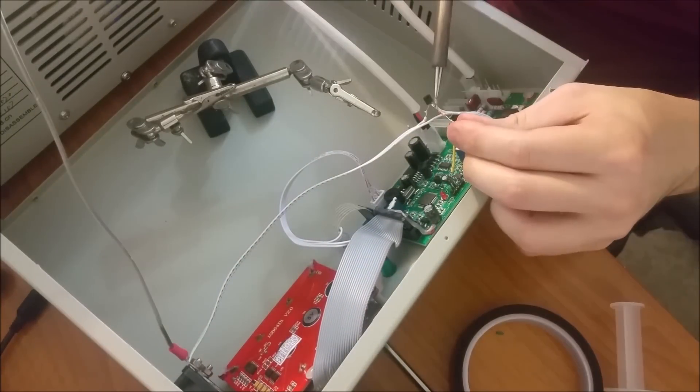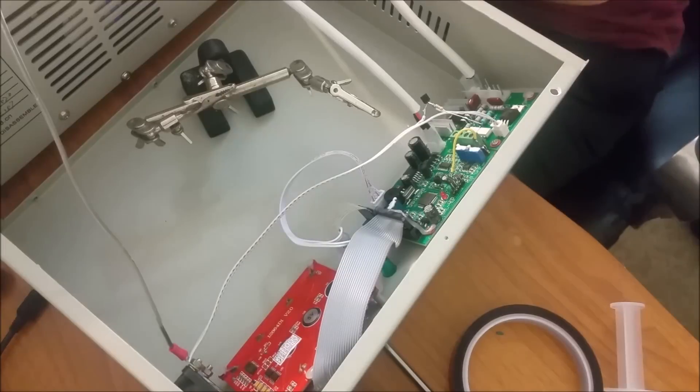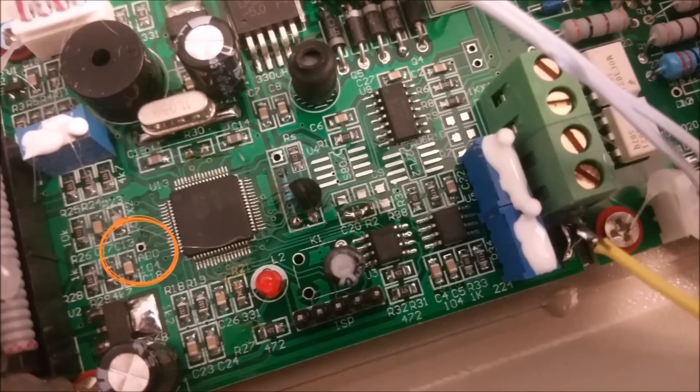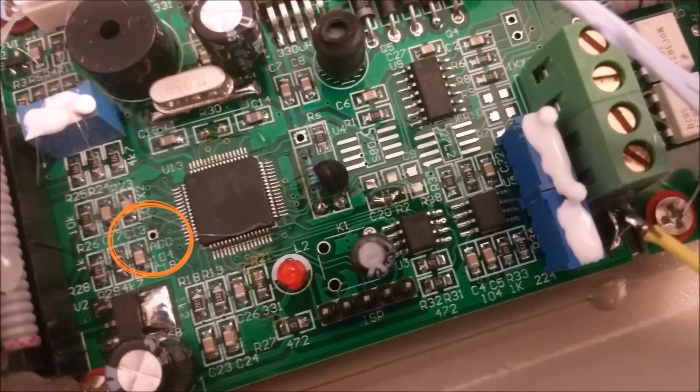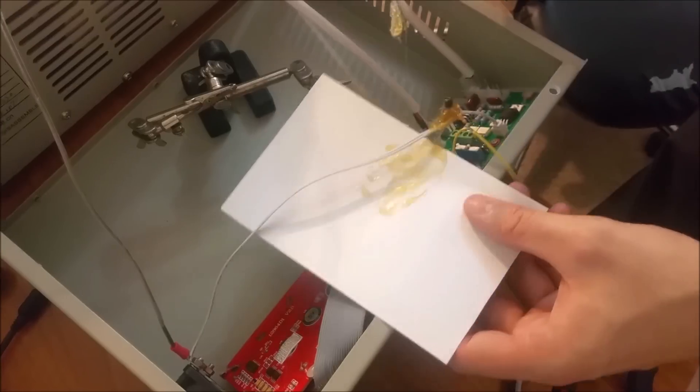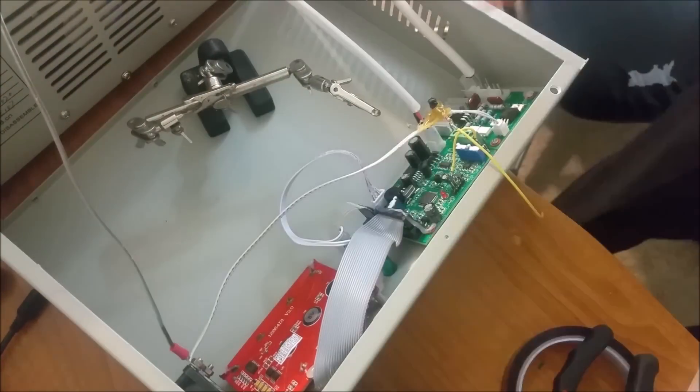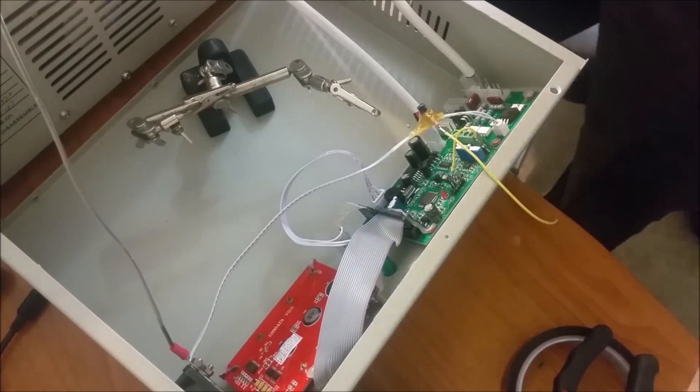Solder a 4.7 kiloohm resistor to the base pin on the transistor. Route a wire from the resistor to the small via that is labeled ADC0. You can try to protect this transistor from shorts by hot-gluing it in place, then wrapping it up in some more Kapton tape.